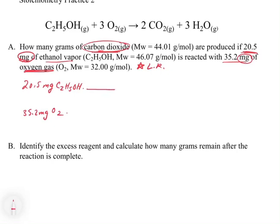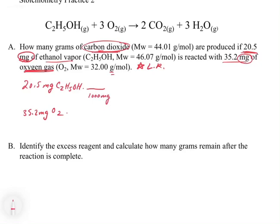Our first step is to convert the milligrams to grams, because our molecular weights are in grams. We can write 10⁻³ grams per milligram, or equivalently 1,000 milligrams per gram — both are the same. Once we convert to grams, we can use the molecular weight of 46.07 grams per mole of C2H5OH.